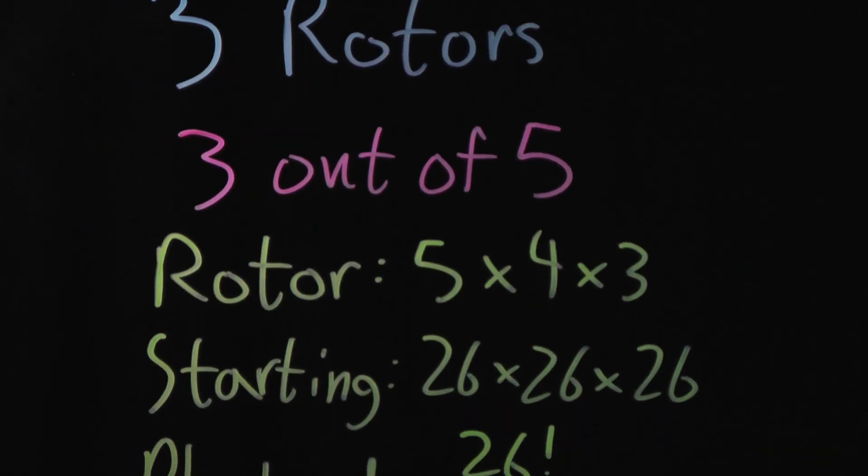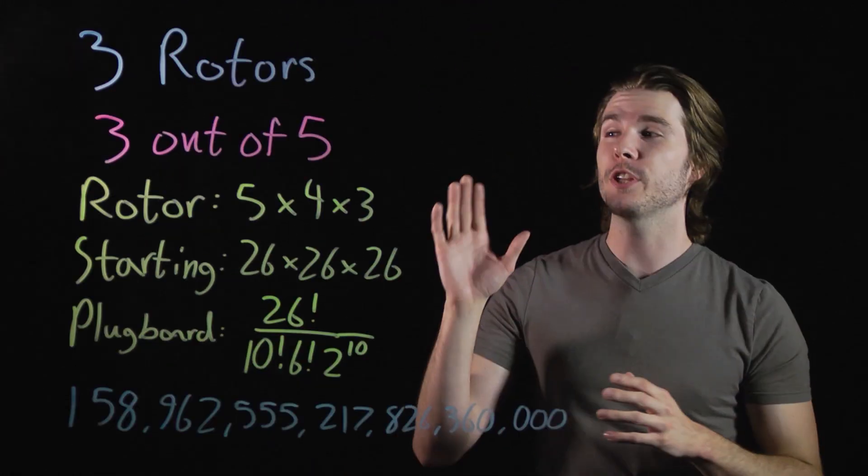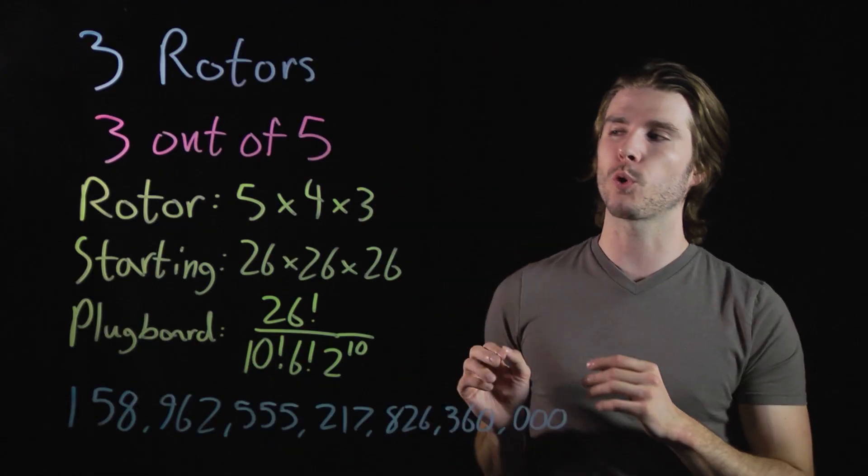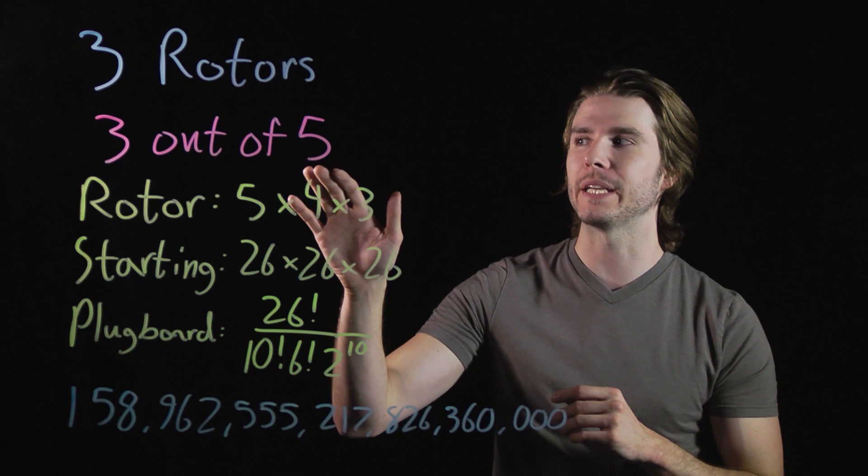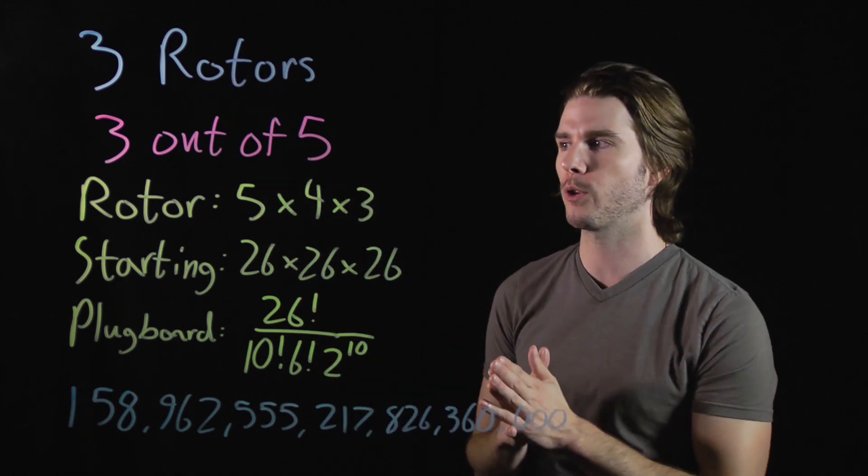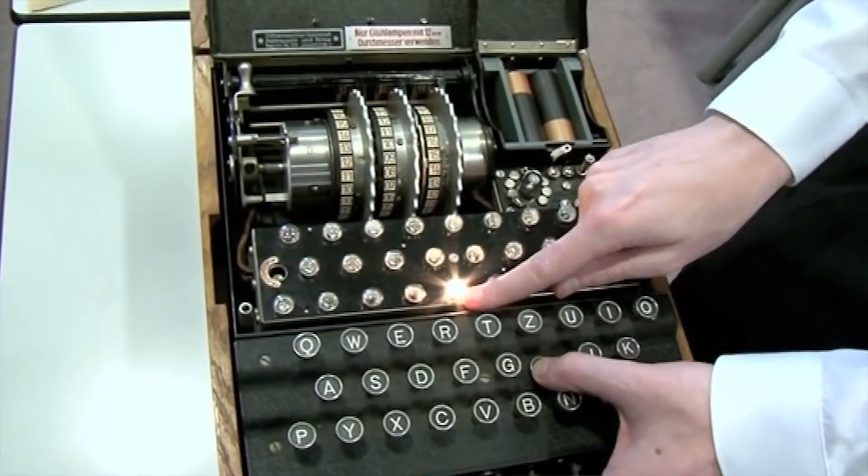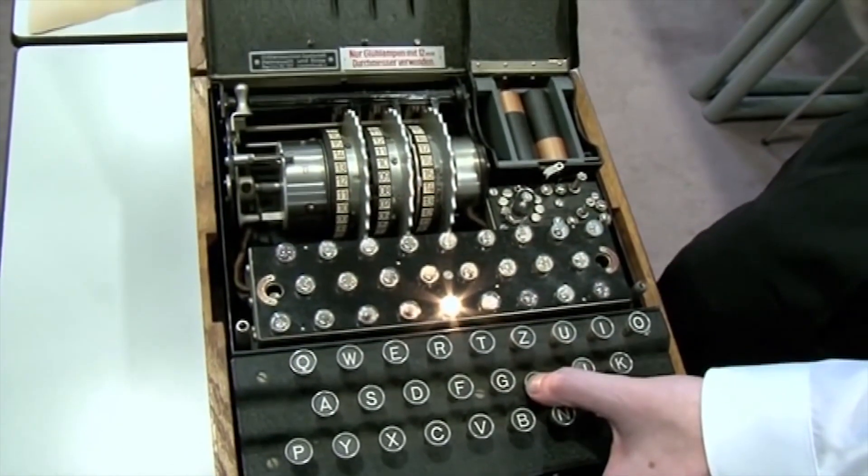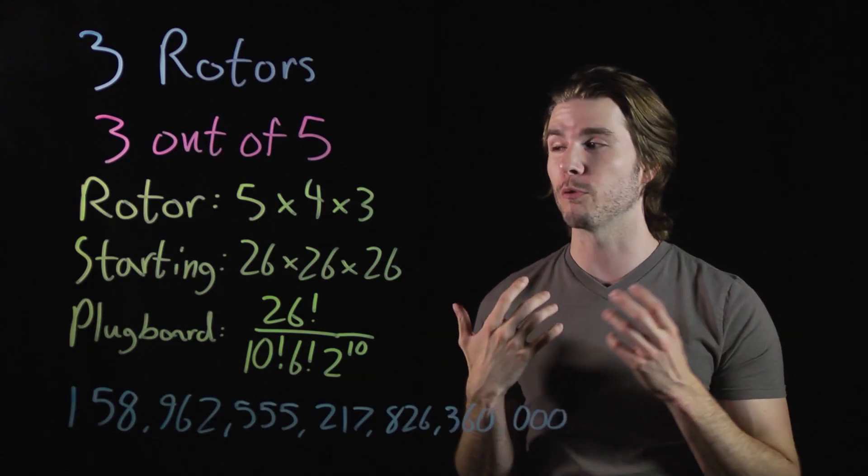So the Enigma machine would select three rotors. Now the Enigma machine that Alan Turing was working on had a selection out of possibly five, and you would choose three, making it even harder to decrypt. So when you're choosing rotors, you have a choice of five, then four, then three. That's a possible combinations of rotors.